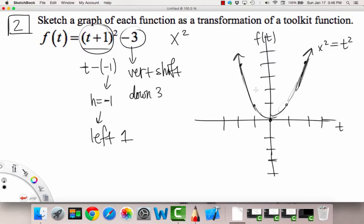What we have to do for each of our points is go to the left 1 and down 3. For example, our origin, our new origin would be at negative 1, negative 3.